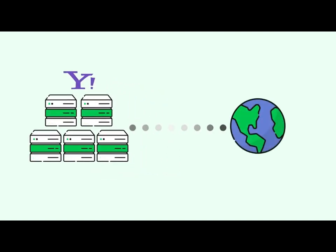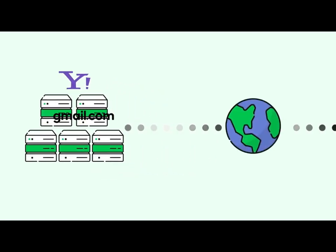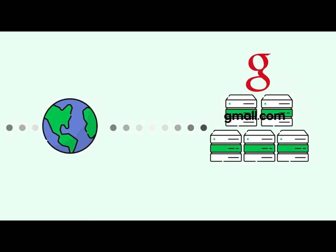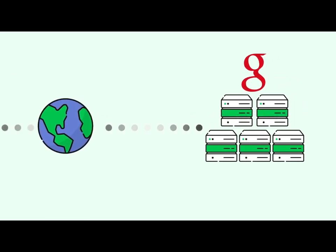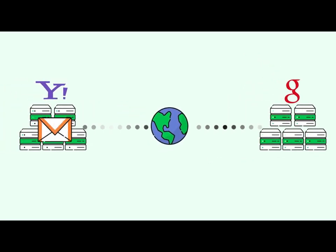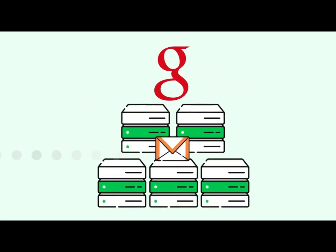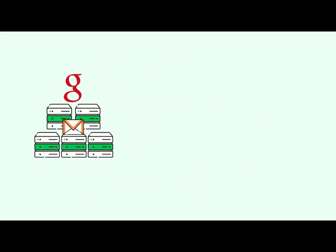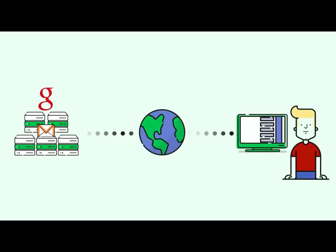The Yahoo SMTP server then goes out to the internet and, through a series of server conversations, locates the SMTP server for the domain name gmail.com. The Yahoo SMTP server passes Maggie's email to Gmail's SMTP server. Once Maggie's email arrives at Gmail's SMTP server, it remains there until Rob logs into his Gmail account and retrieves the email.